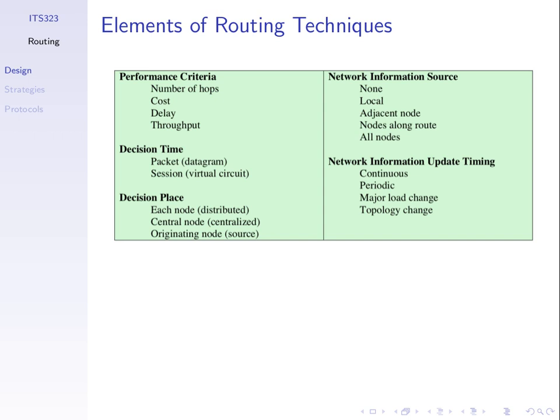Key routing design decisions include when to decide which route to take, who decides, who collects the information — whether all nodes participate in a distributed manner or there's a special centralized node. Also important is where we get information from and how often we collect it.